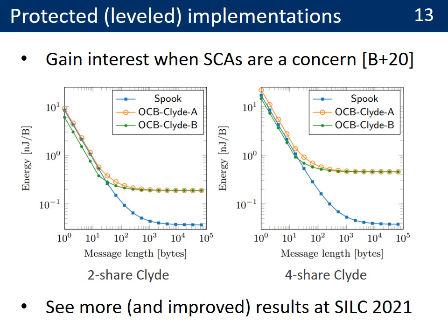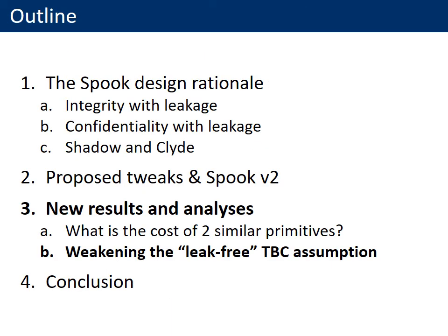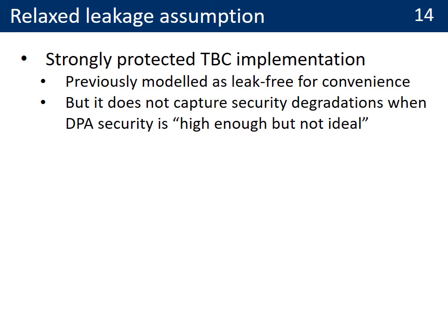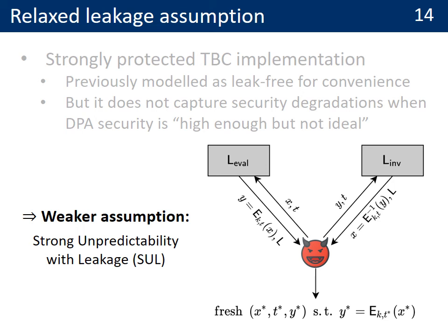We refer to a CHES 2021 paper for new and improved results. As the last technical contribution, we put forward new results regarding the leakage analysis of Spook. The integrity of Spook in the presence of leakage heavily relies on the presence of a strongly protected tweakable block cipher. Informally, this requirement is generally translated into security against DPA. Formally, it was modelled as leak-free for convenience. Yet, despite providing interesting first steps towards understanding the leakage resistance properties of authenticated encryption schemes, this idealized model does not capture the security degradation occurring in the frequent case where DPA security would be good enough but not ideal. We contribute to this issue by showing the ciphertext integrity of Spook under a weaker assumption of strong unpredictability with leakage.